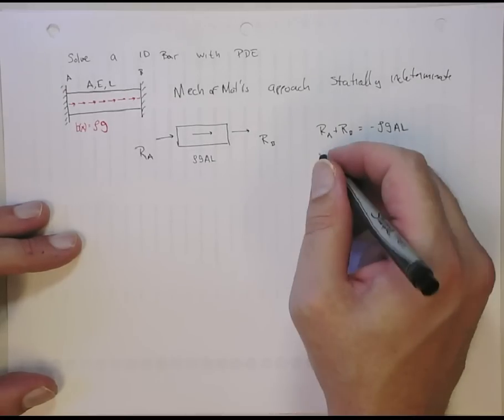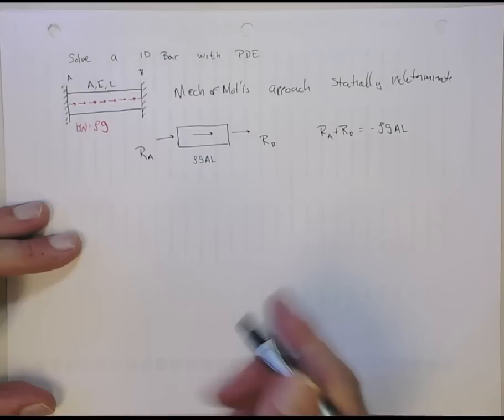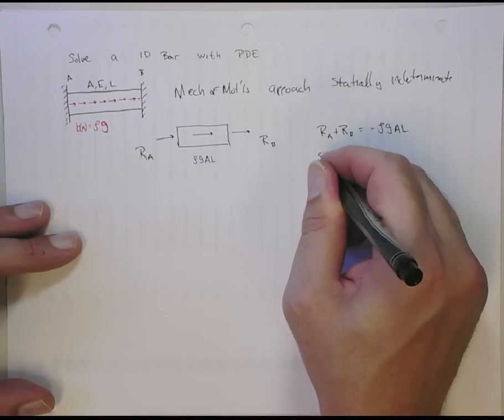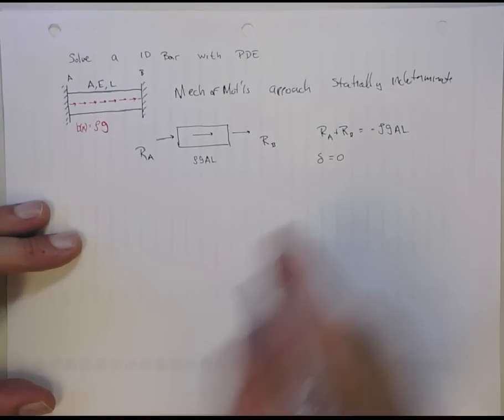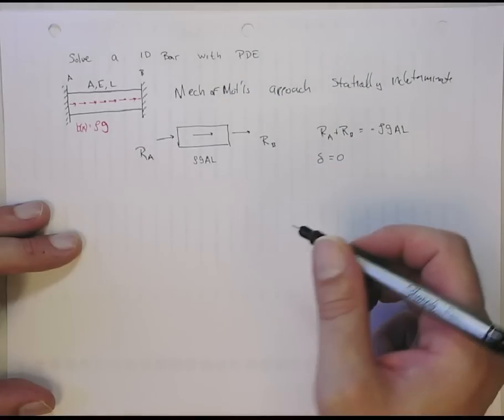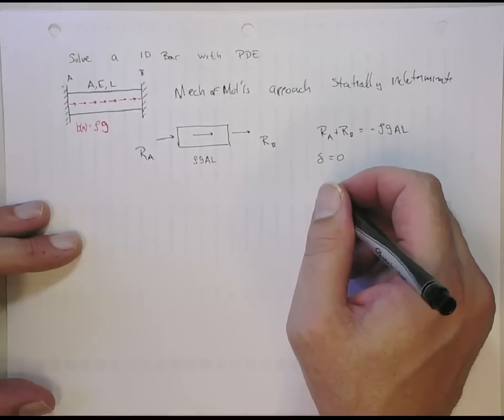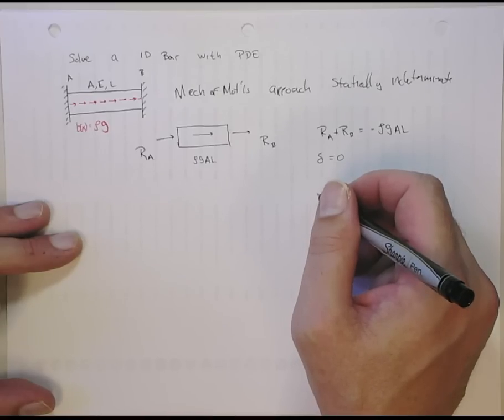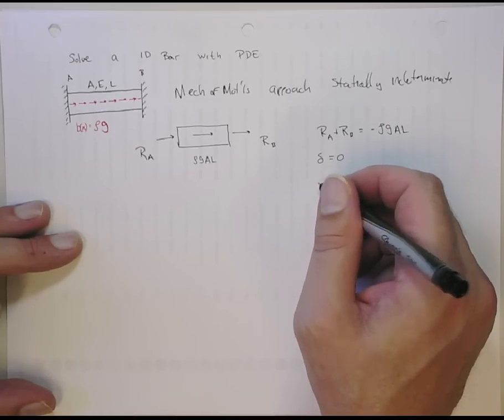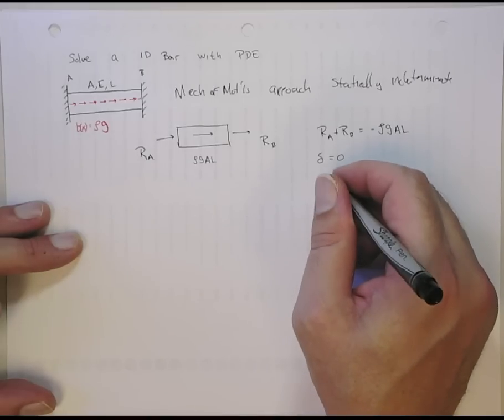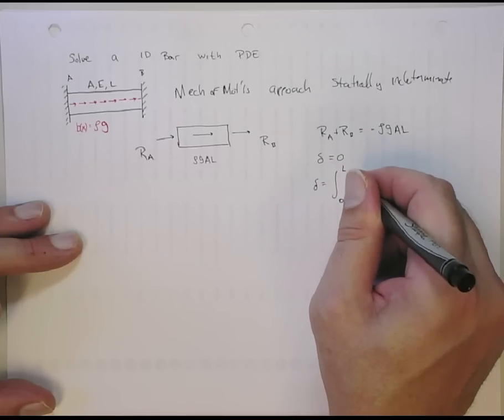And the way you get this is you have to get that the total, you use the statically indeterminate case, that the total elongation has to be zero, because it's clamped here. So the total elongation has to go to zero. And since it's a distributed force, you need to go in and figure out that the strain field is, what it's going to be? It's going to be a linear strain field.